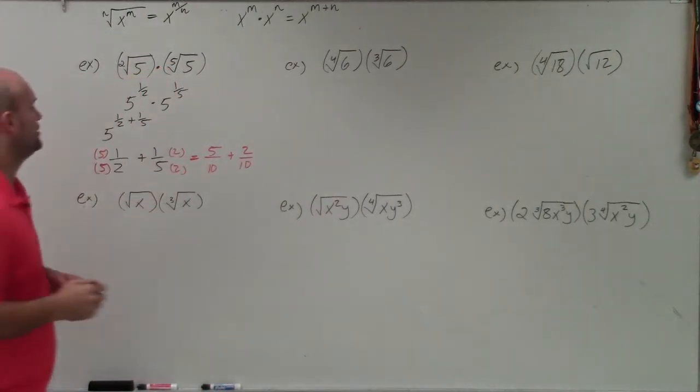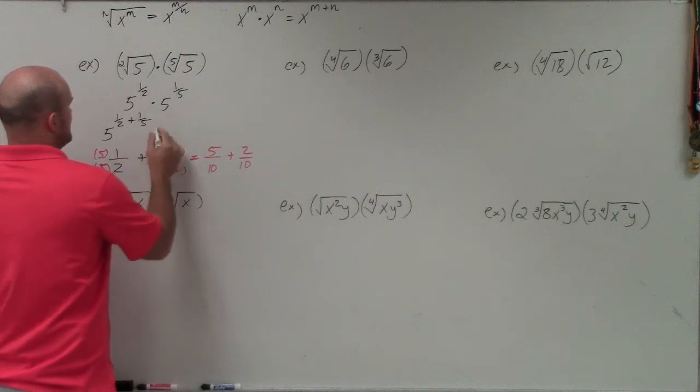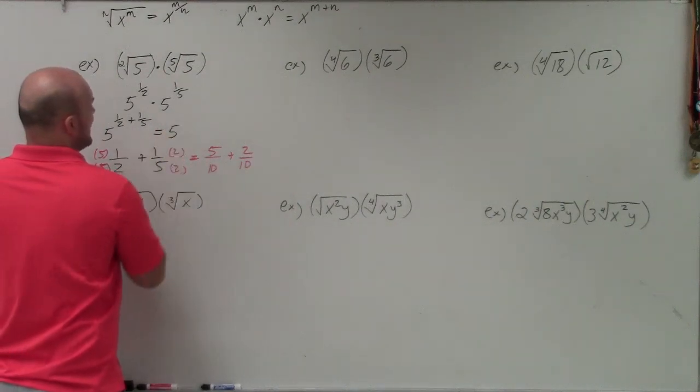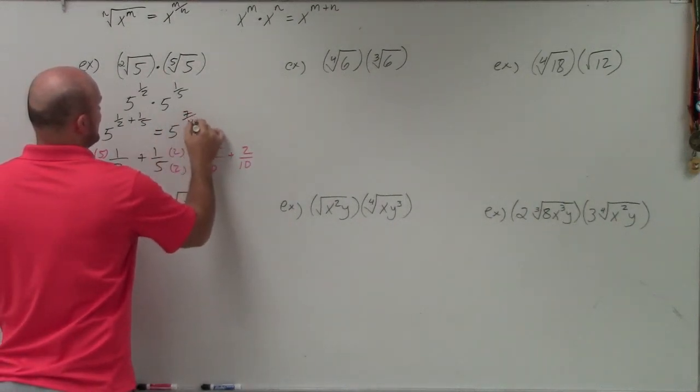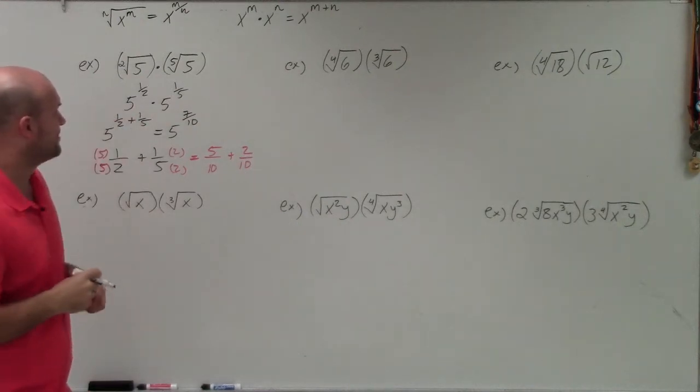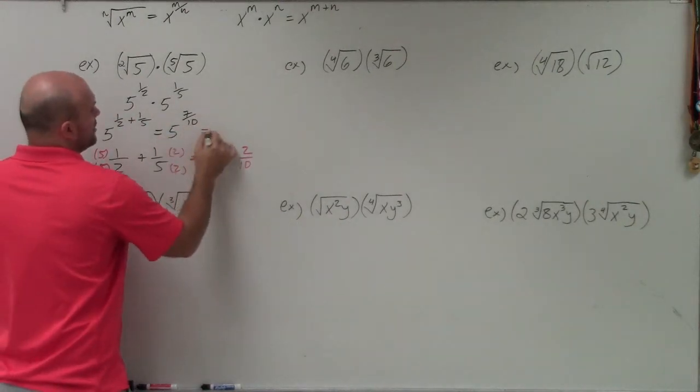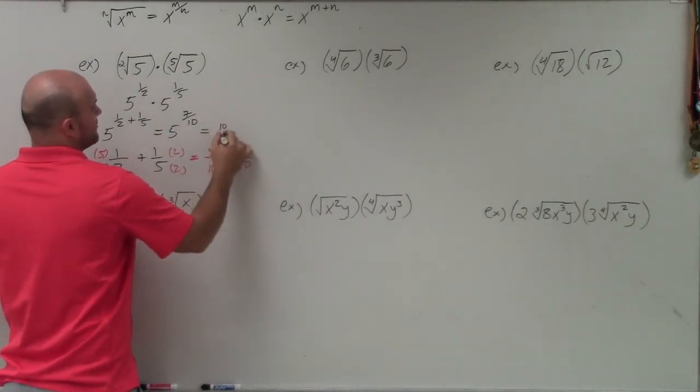So now we can go ahead and add those up. And you can see our final solution is going to be 5 to the 7 over 10. And we can rewrite that as a radical expression, or we can also rewrite that back as a radical.